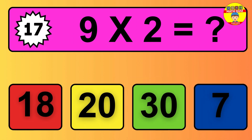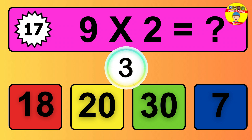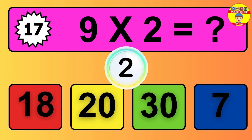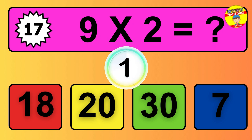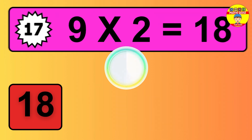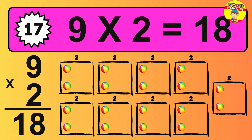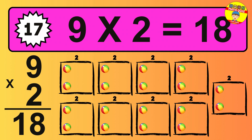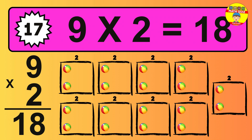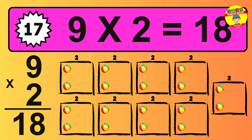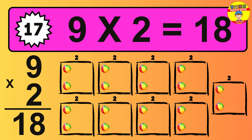Question 17. 9 times 2 equals what? The answer is 9 times 2 is 18. To calculate, we have 9 groups with 2 balls each one. So how many balls do we have? 18 balls.